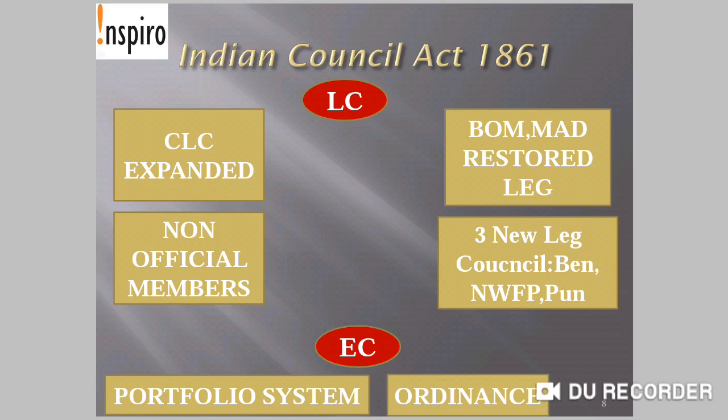Indian Council Act 1861. The Central Legislative Council was expanded and non-official members are now allowed in the Central Legislative Council. In 1862, the then Viceroy Lord Canning nominated three Indians to this Legislative Council: the Raja of Banaras, the Maharaja of Patiala, and Sir Dinagar Rao.